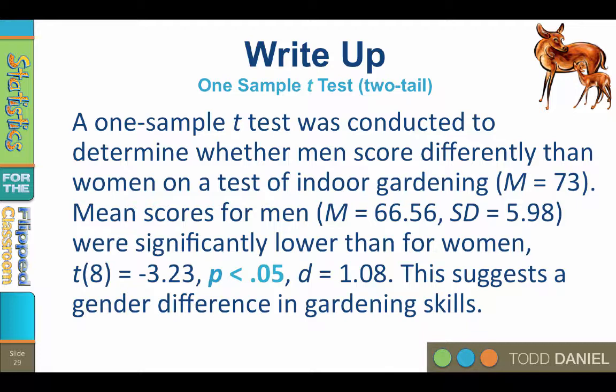Here is how we would write up these results in APA style. A one sample t-test was conducted to determine whether men scored differently than women on a test of indoor gardening. Mean scores for men were significantly lower than for women: t(8) equals negative 3.23, p less than 0.05. This suggests a gender difference in gardening skills — that last statement would go in your discussion section.